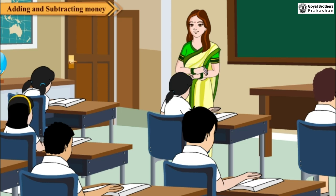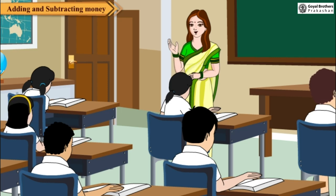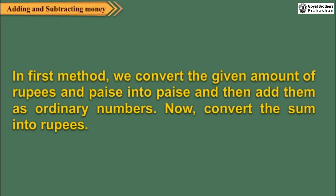Here I will tell you two methods for adding or subtracting money. In the first method, we convert the given amount of rupees and paise into paise and then add them up as ordinary numbers. Now, convert the sum into rupees.